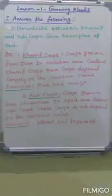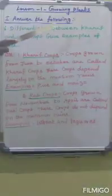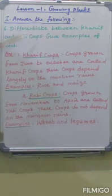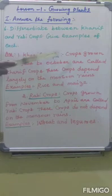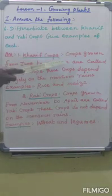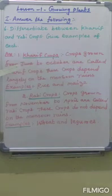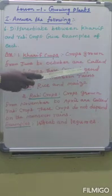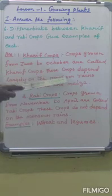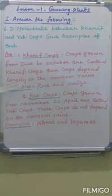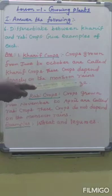Last question: Differentiate between Kharif and Rabi crops. Give examples of each. Kharif crops: crops grown from June to October are called Kharif crops. These crops depend largely on the monsoon rains. Examples: rice and maize.